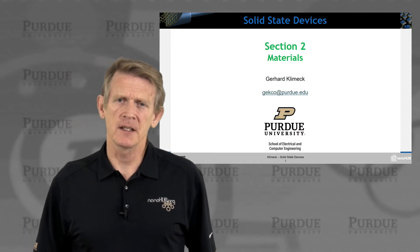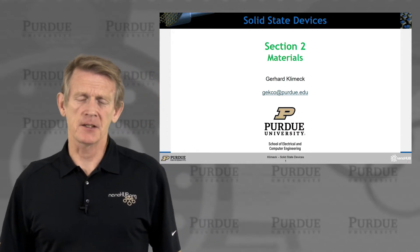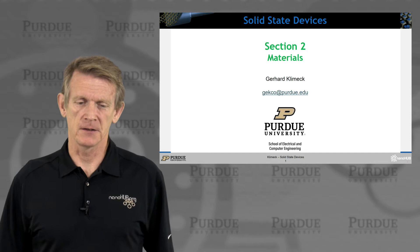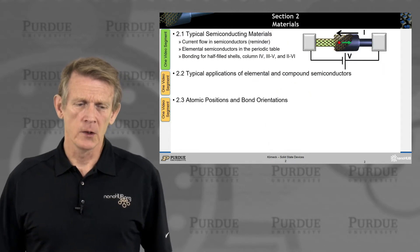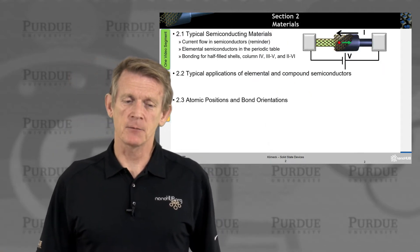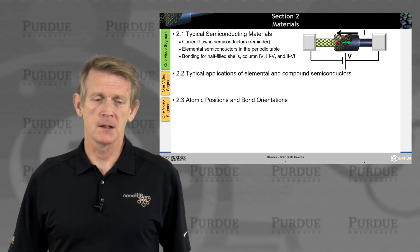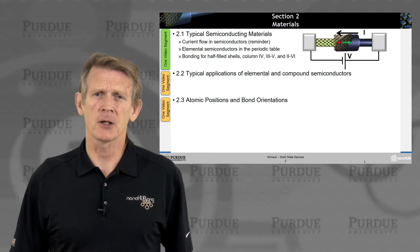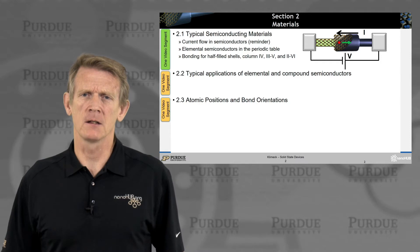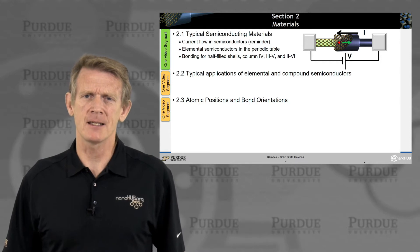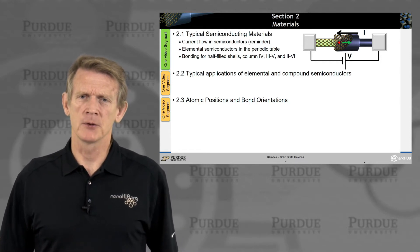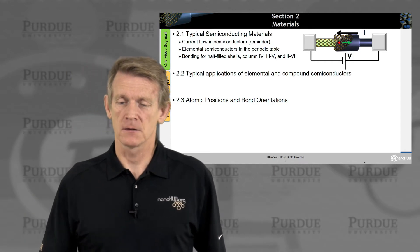Welcome back to Solid State Devices Section 2. We'll talk about materials in this section. We'll have it structured in three different segments: typical semiconductor materials, applications, and then atomic positions and bond orientations.